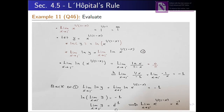e and ln cancel, so we get: limit of y as x→1⁻ = e^(−1). Since y = x^(1/(1−x)) from the beginning, replacing y gives us: limit of x^(1/(1−x)) as x→1⁻ = e^(−1). So 1^∞ resolves to e^(−1).